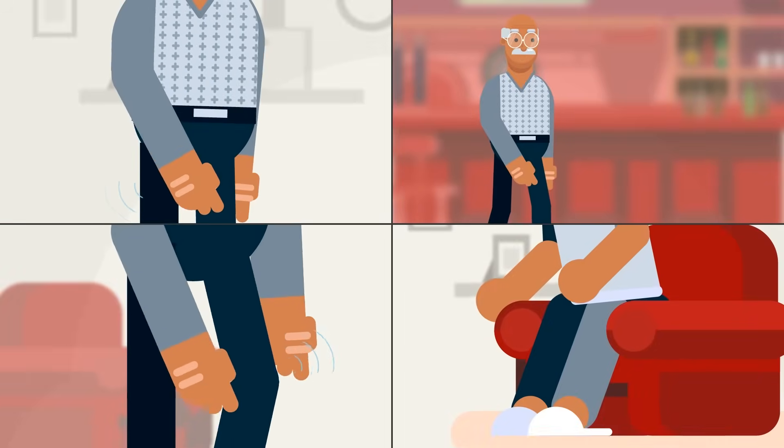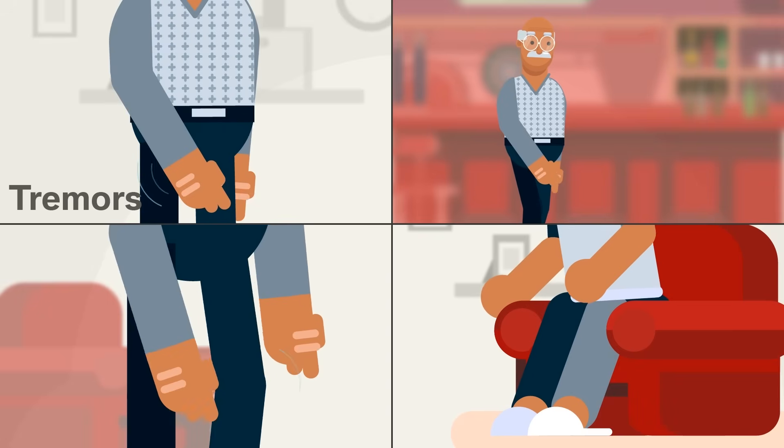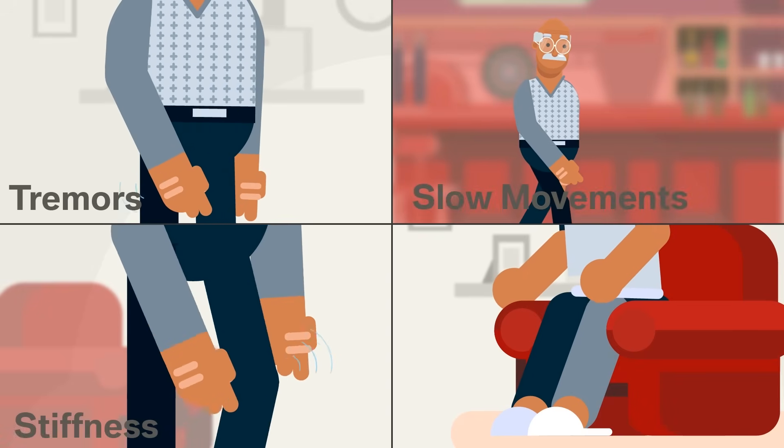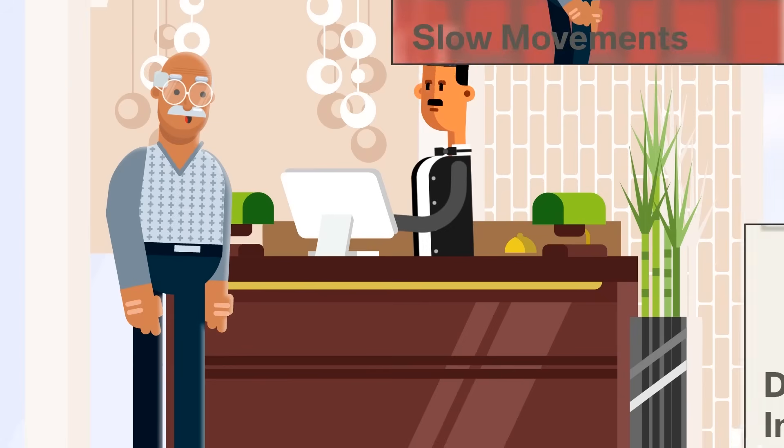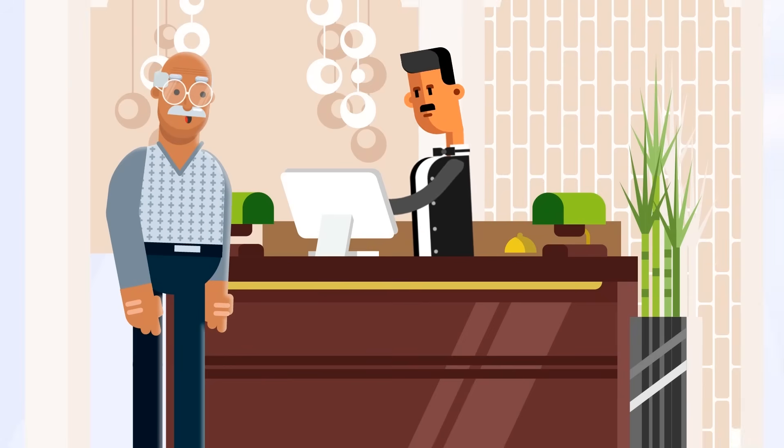The disease causes symptoms like tremors, slow movements, stiffness, and difficulty initiating movements. Some patients also have trouble controlling their speech and tend to talk very quietly.